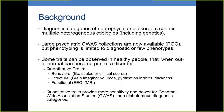The diagnostic categories of neuropsychiatric disorders contain a lot of different heterogeneous etiologies, including different genetic etiologies. For example, large collections of GWAS like the PGC have a lot of people inside, but the phenotyping is usually limited to diagnostic or very few phenotypes like age of onset or very common phenotypes.